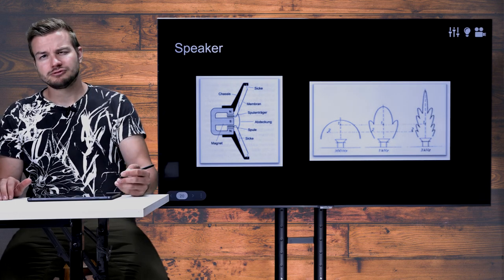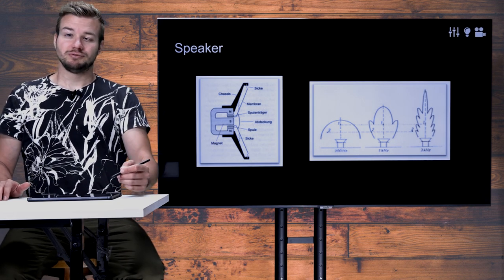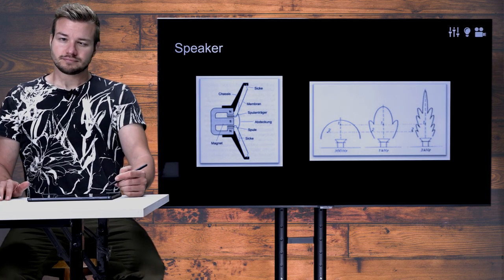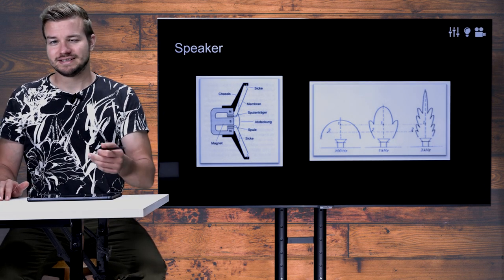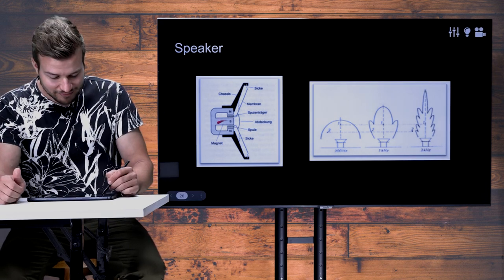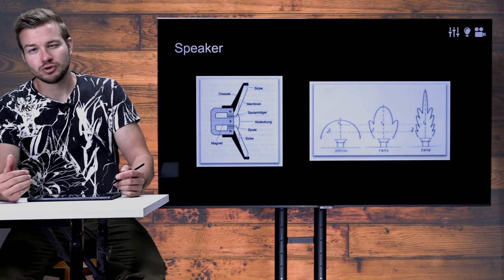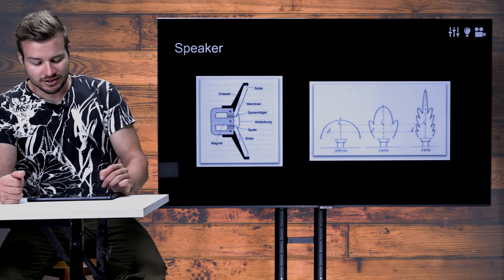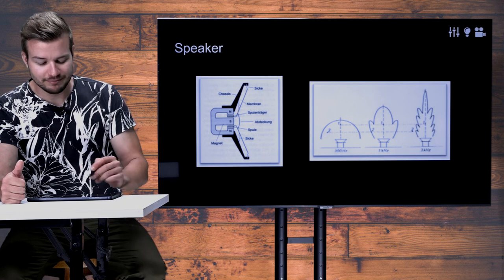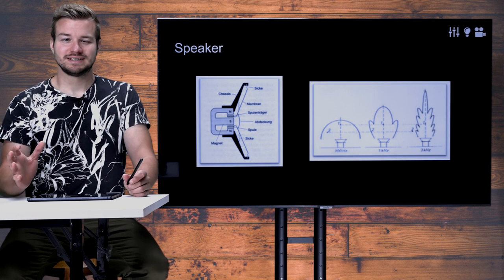In the dynamic microphone video, we had a coil and a magnet within the coil — the magnet was moving and this is how the electrical signal was induced. In a speaker it is the other way around: we have a fixed magnet and a coil which is able to move. We put the signal we want on the coil, so the coil starts moving within the magnet, and it moves the membrane. By the movement of the membrane, we generate an acoustic signal.